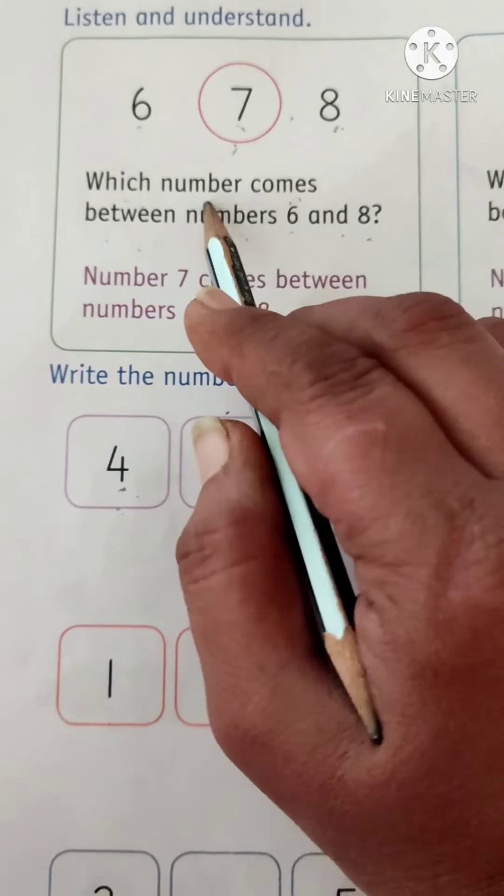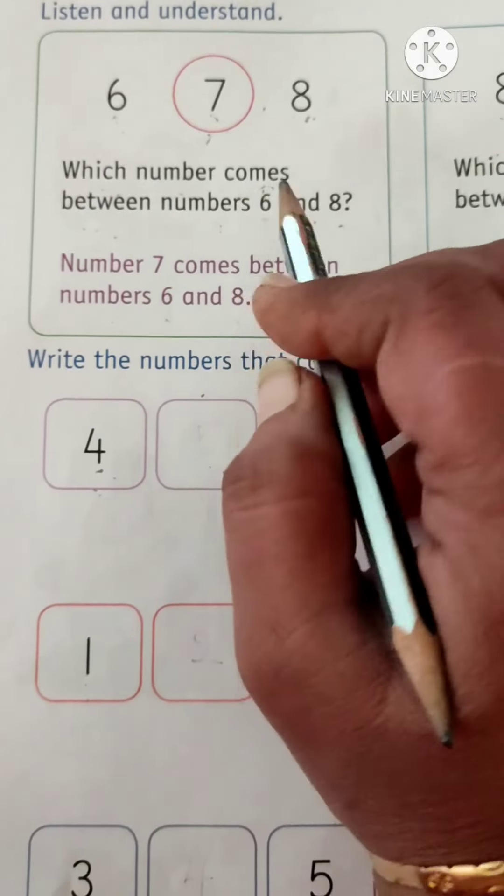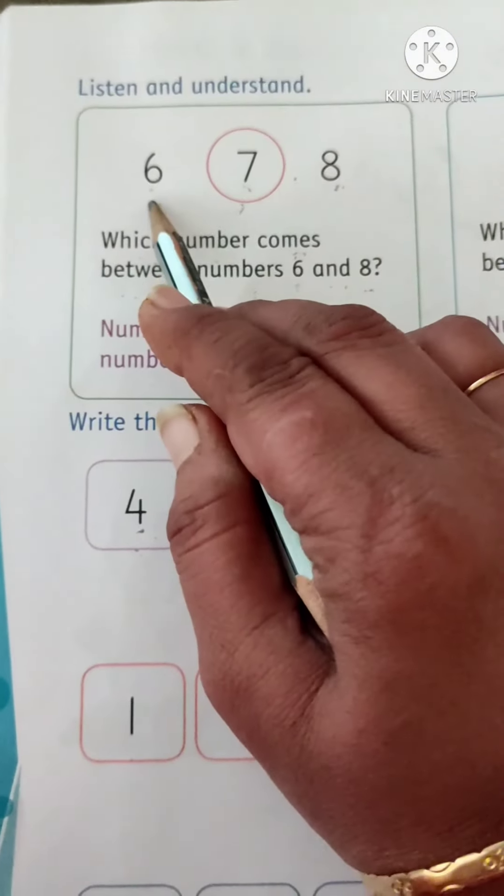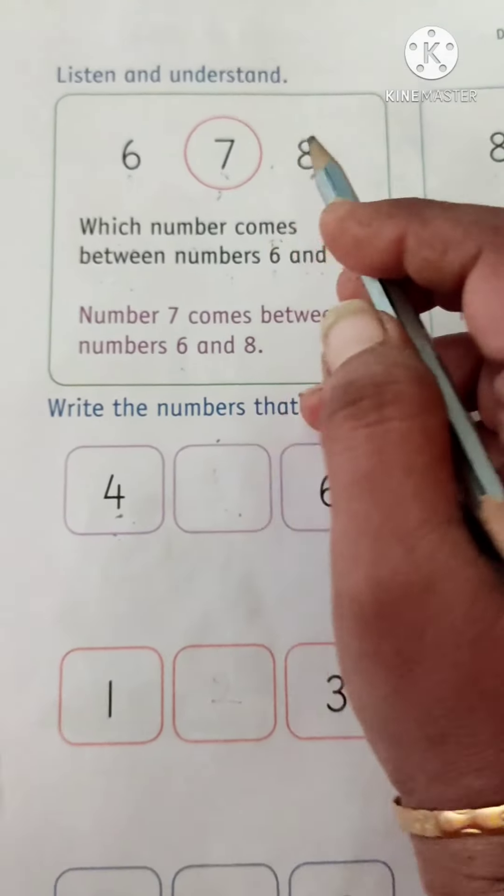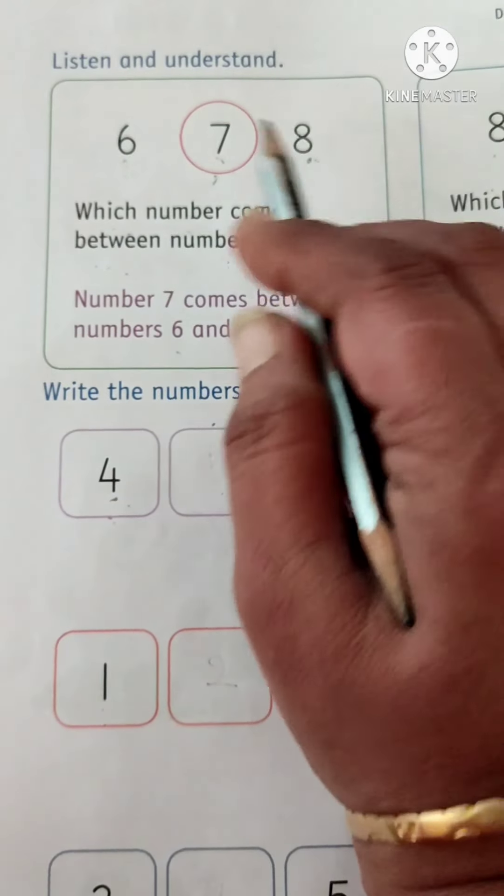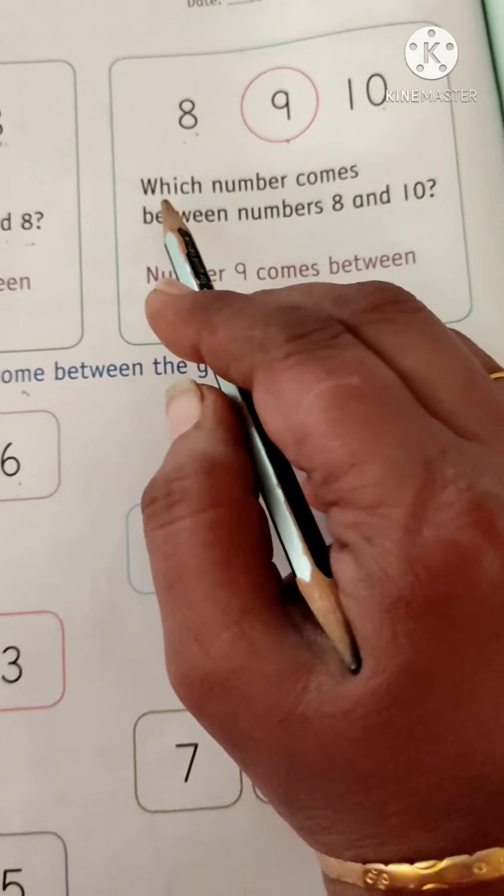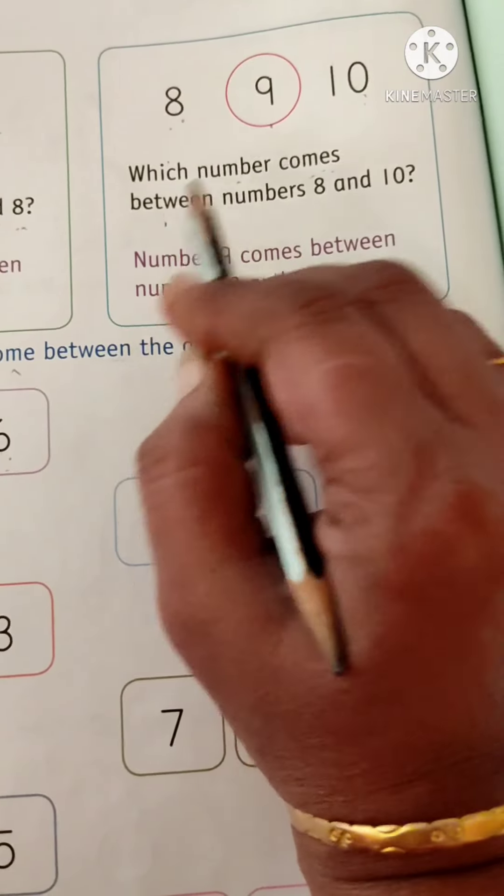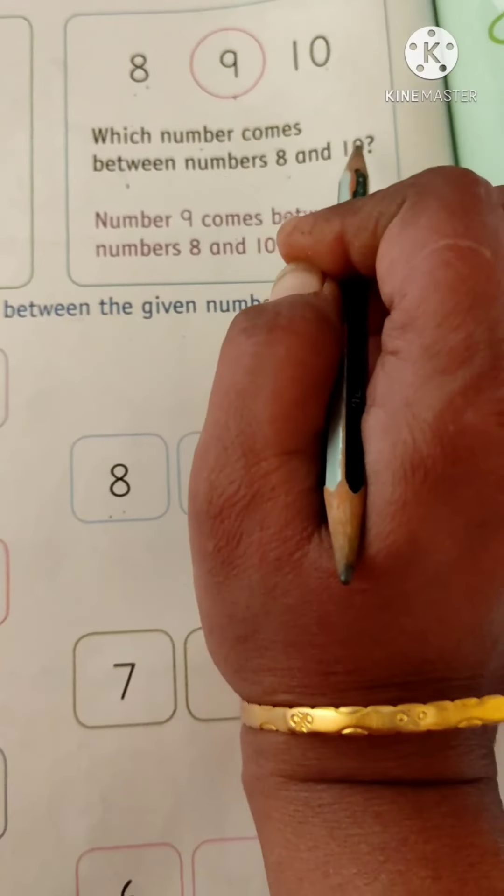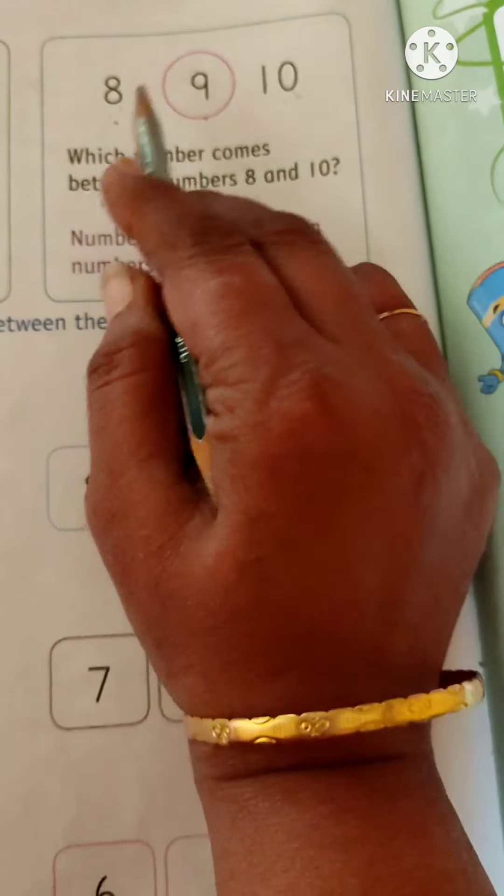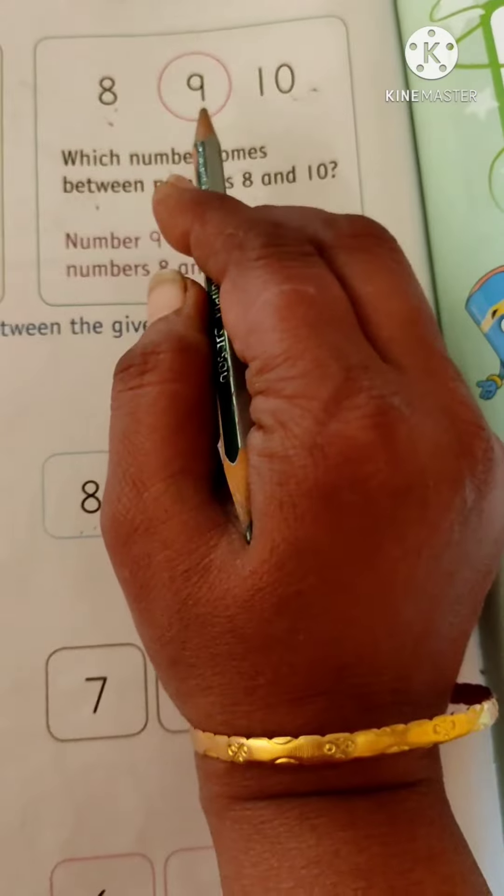Listen and understand. Which number comes between number 6 and 8? See, this is 6, and this is 8. Which number comes between 6 and 8? 7. Same way, which number comes between numbers 8 and 10? This is 8 and 10. Which number comes between 8 and 10? 9.